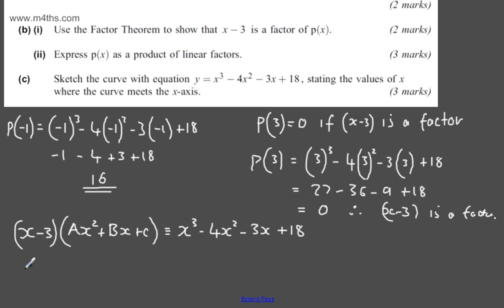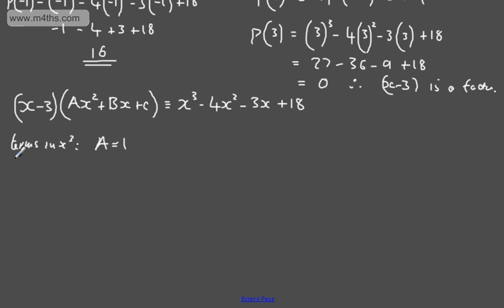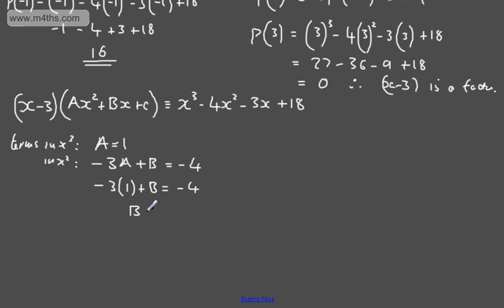Considering terms in x³: ax³ = x³, so a = 1. Considering terms in x²: -3a + b = -4, so -3(1) + b = -4, giving b = -1. Looking at the constant: -3c = 18, therefore c = -6.